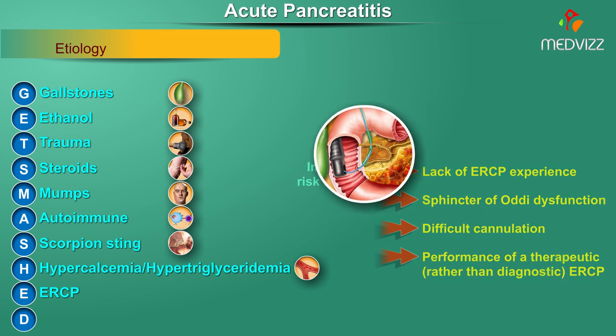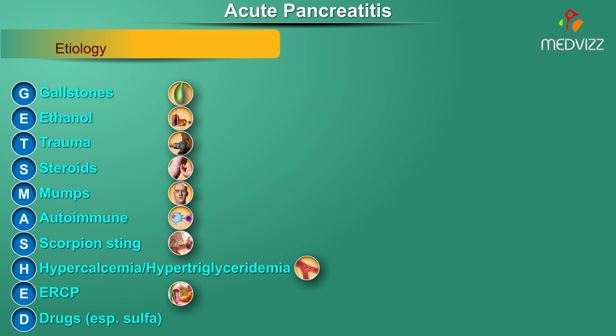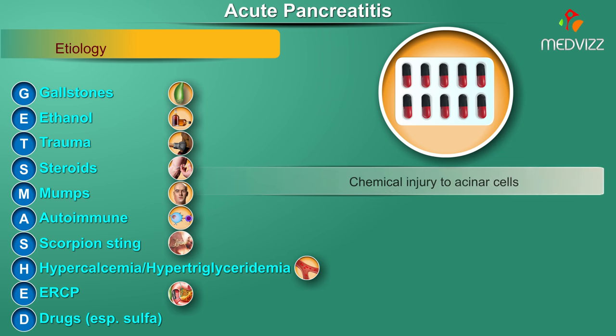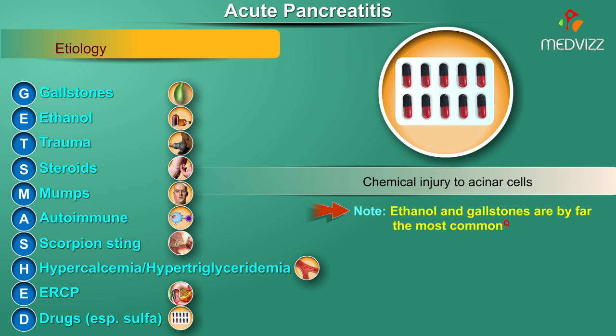D stands for drugs. Certain drugs, especially the sulfonamide group, result in chemical injury to the acinar cells. Note that ethanol and gallstones are by far the most common causes — an important point to be noted.